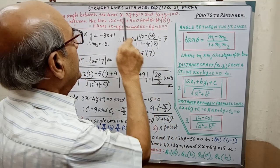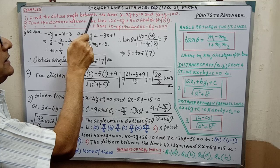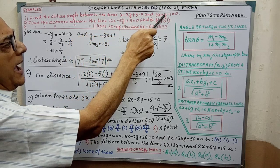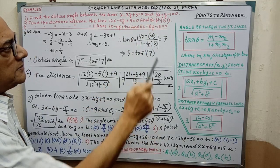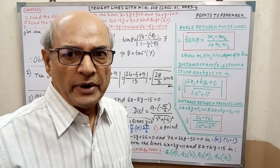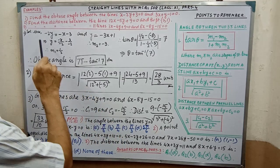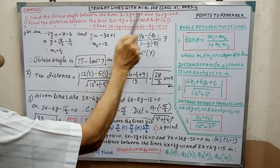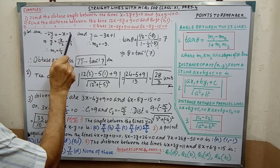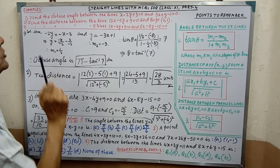On this formula one example is given: find the obtuse angle between the lines x - 2y + 3 = 0 and the other line. Before finding the obtuse angle, you have to find the angle between the two straight lines by applying this formula. So we have to find out the slopes of these lines. Rearranging, -2y = -x - 3, and by simplifying we get slope m1 = 1/2.